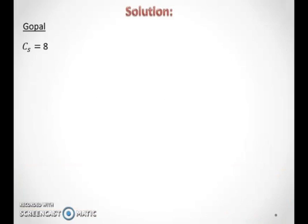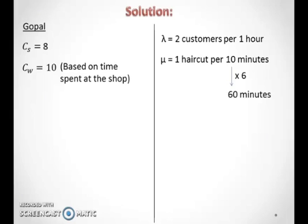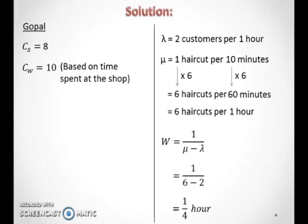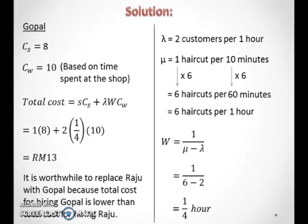Service cost for Gopal is 8 ringgit per hour, while waiting cost remains 10 ringgit per hour. Lambda for Gopal is the same as Raju — 2 customers per hour — while mu for Gopal is 1 haircut per 10 minutes. Change 10 minutes to 1 hour by multiplying by 6, so mu becomes 6 haircuts per hour. Calculate W for Gopal by substituting lambda and mu into the W formula, then calculate total cost by substituting S, service cost, lambda, W, and waiting cost into the total cost formula. Since total cost for Gopal is less than total cost for Raju, it is worthwhile to replace Raju with Gopal.